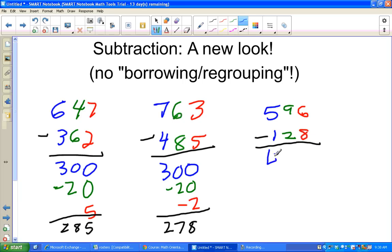So, 500 minus 100 gives us 400. 90 minus 20 gives us 70. And 6 minus 8 gives us negative 2. And if you add those up, you get 470 minus 2, which is 468.